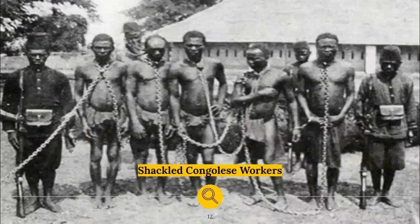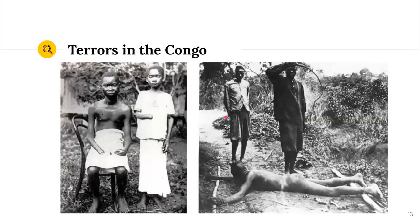But if they didn't collect the rubber, there would be severe punishments. You had shackled workers — essentially enslavement — occurring 70 years after the Atlantic slave trade had ended. A small whip called the chicotte was used as a severe punishment for those who didn't meet their quota. And then inevitably what would happen is the dismemberment of hands. You can see these two young kids with their hands having been removed.